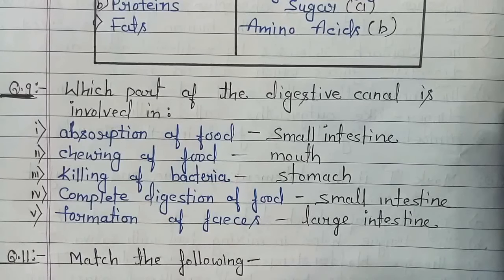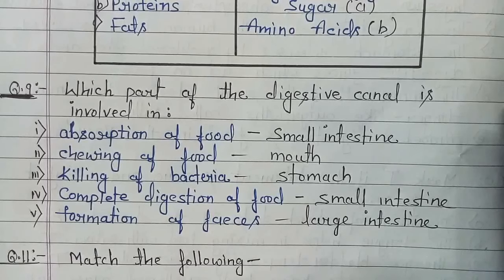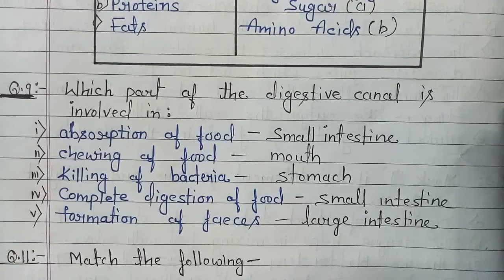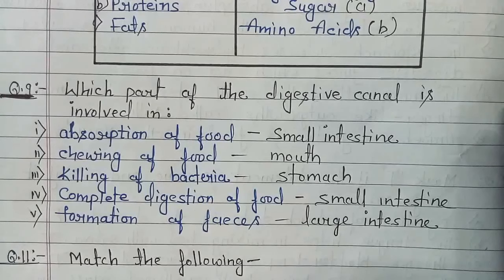Next question: which part of the digestive canal is involved in each process? The parts are mouth, stomach, esophagus, small intestine, and large intestine. Absorption of food takes place in the small intestine. Absorption and assimilation are both involved in the small intestine. Chewing of food takes place in the mouth.